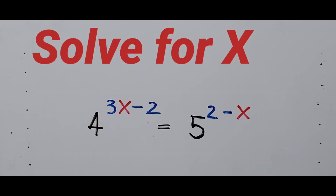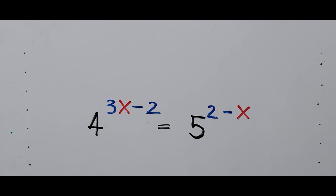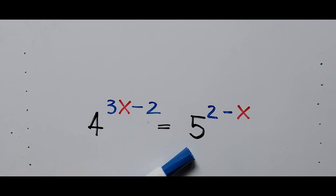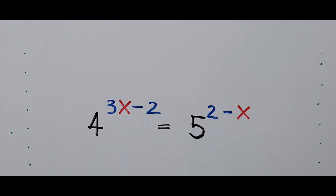Hello everyone, welcome to Cassiano Easy Math. In this video we have an exponential equation to solve: 4 to the power of 3x minus 2 equals 5 raised to the power of 2 minus x, and we're solving for the value of x. For those new to my channel, please don't forget to like and subscribe for more videos.